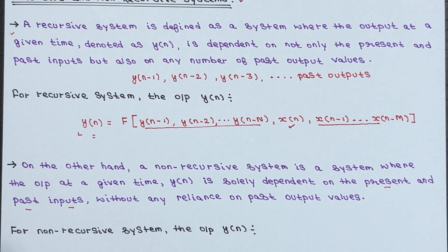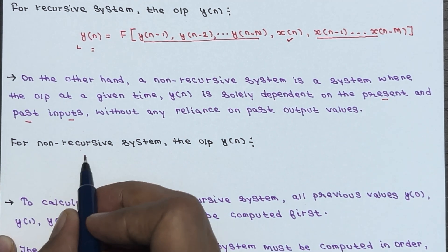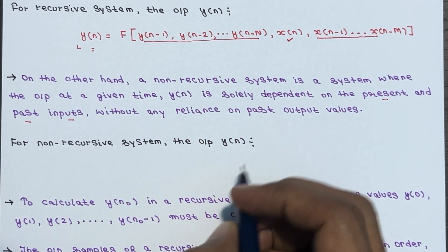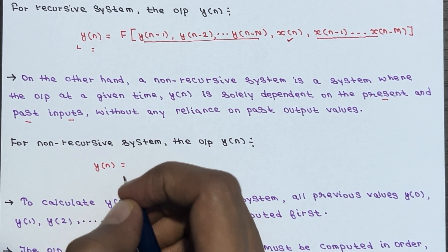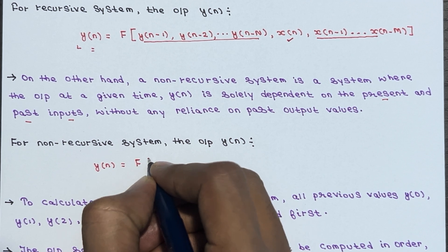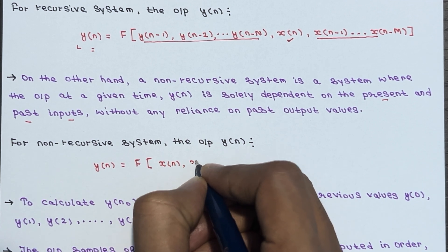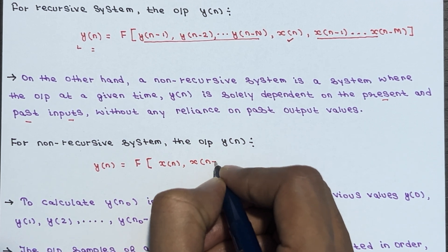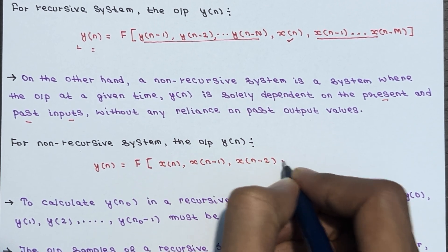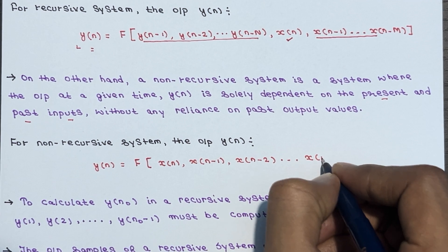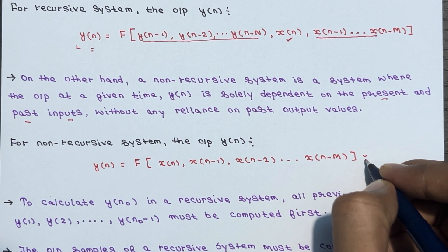For a non-recursive system, the output y of n depends upon the present and past inputs, so it is equal to a function of x of n and the past inputs x of n minus 1, x of n minus 2, going till x of n minus m.